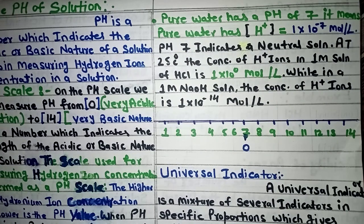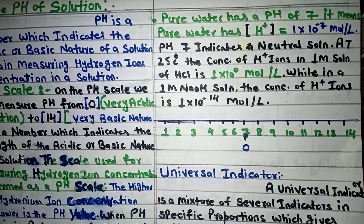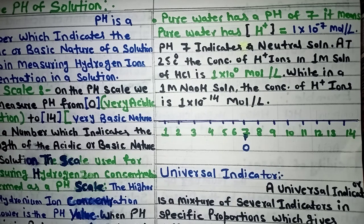Pure water has an H+ concentration of 1×10⁻⁷ mole per liter. For a 1 molar solution of HCl (hydrochloric acid): the concentration of H+ ions is 1×10⁰ mole per liter. Since both solute and solvent are liquid here, we use mole per liter. If solute is a solid particle, we use gram per liter. The H+ concentration value of 1×10⁰ (which equals 1) indicates a strongly acidic character.